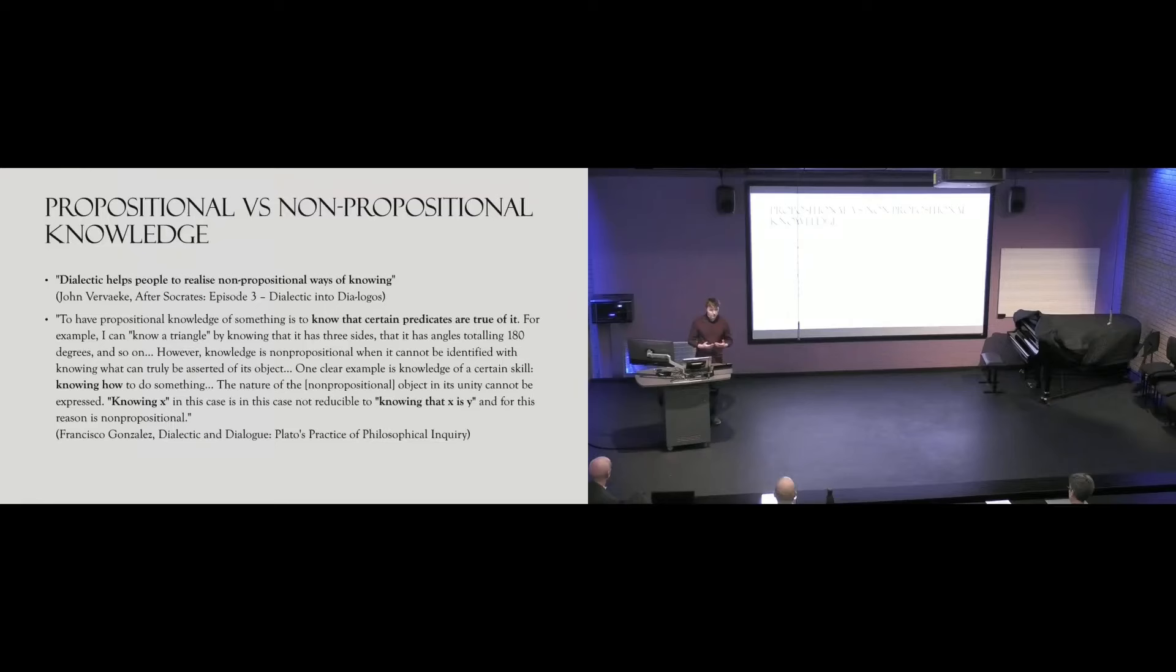John Vervaeke also points out that propositional or semantic memory resides in a different area of the brain than non-propositional procedural memory. For example, propositionally I know that a triangle has three sides and its angles add up to 180 degrees. In contrast, skills such as riding a bike or playing a musical instrument can't necessarily be reduced to a set of propositions and are therefore non-propositional. Similarly, I would like to suggest that our experience of love is also non-propositional. Imagine needing your loved ones to prove their love in a logical proposition. I know that I love my partner without needing to prove it logically. Instead, I try to understand how to love her in a way we can appreciate together.